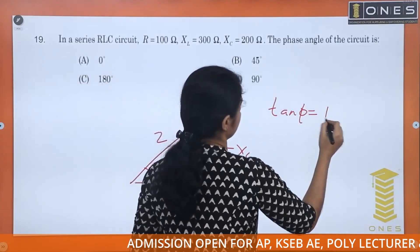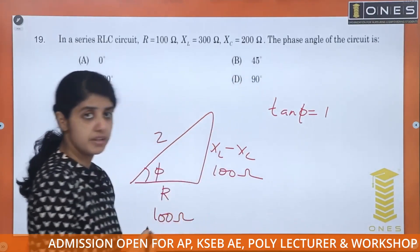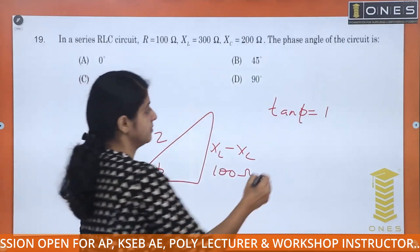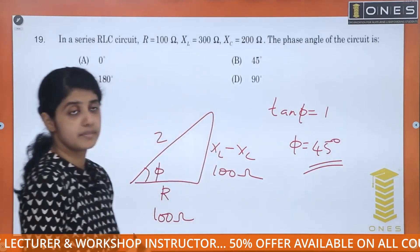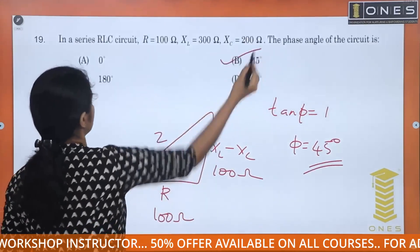Here, 100 by 100, that is 1. If tan phi is equal to 1, phi is equal to 45 degrees. The answer is 45 degrees.